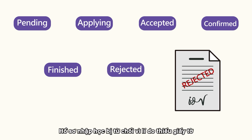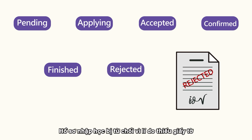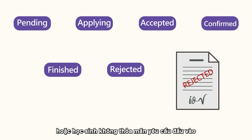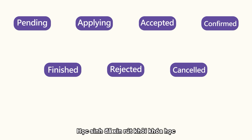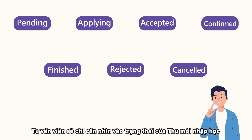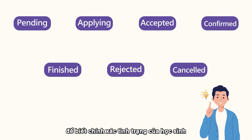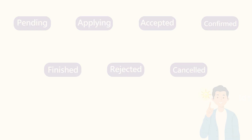Rejected means the application has been rejected due to missing documents or the student did not meet the entry requirements. And finally, Cancelled, indicating that the student has withdrawn from the course. Counsellors will only need to glance at the status of the offer letter to know exactly at which stage the student is.